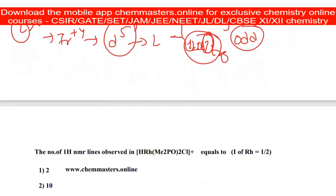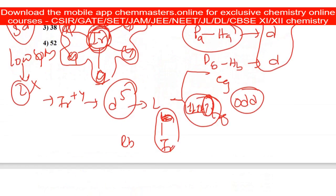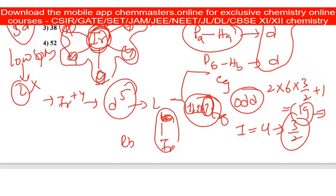Here we need to consider the nuclear spin of chlorine, that is three by two. How many chlorines are there? Six chlorines are there. That's why two into six into three by two plus one, you will get 19 as the correct answer. That is, 19 signals are produced.